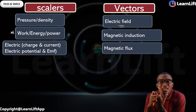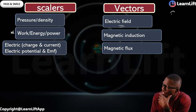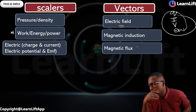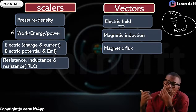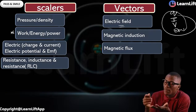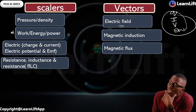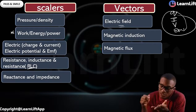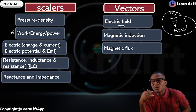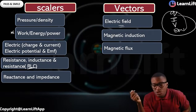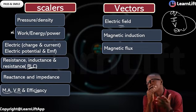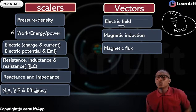Charge, current, voltage, and EMF — all of them are scalars. Magnetic flux is also scalar. In your RLC circuit, reactance and impedance are all scalars. And for machines: mechanical advantage, velocity ratio, and efficiency are all scalars. These are examples of scalars — take note of them. Now we're going to take past questions, which will help you know them better.